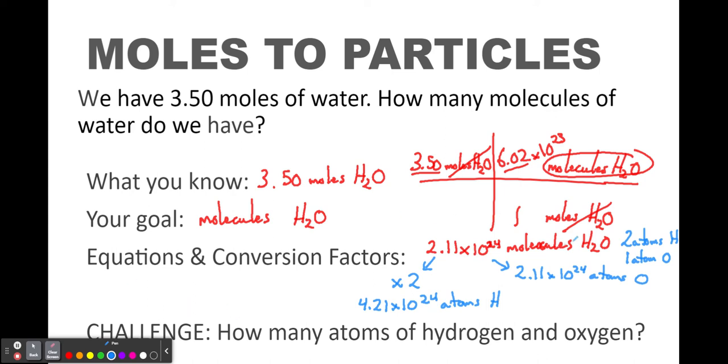So 4.21 times 10 to the 24th atoms of hydrogen. Right, because we have this many molecules of H2O, but every single one of those molecules has 2 atoms of hydrogen in it, so we multiply it by 2.